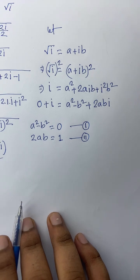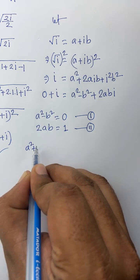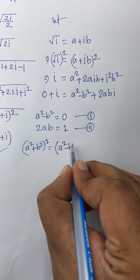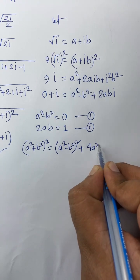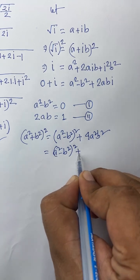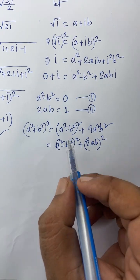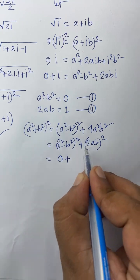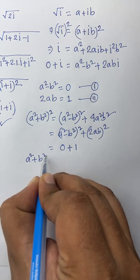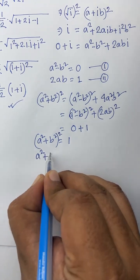Then we find out the value of a squared plus b squared. We know that (a squared plus b squared) whole squared equals (a squared minus b squared) whole squared plus 4ab squared. Here a squared minus b squared equals 0, so that term is 0. And 2ab equals 1, so 1 squared equals 1. We find the value of a squared plus b squared equals 1.